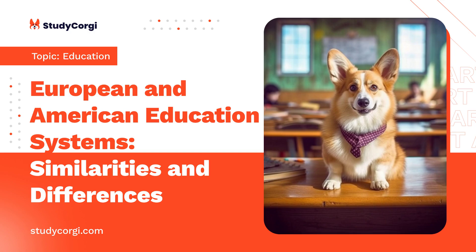The United States has the best universities and research centers in the world. Consequently, the United Kingdom and the United States governments concur that science and higher education are the foundation stones of their two nations' 21st century economies, and that the United Kingdom and the United States have a responsibility to further their global leadership roles in these essential fields. The United States is also the largest spender in areas of scientific research, while the United Kingdom leads the G8 countries in scientific publications.